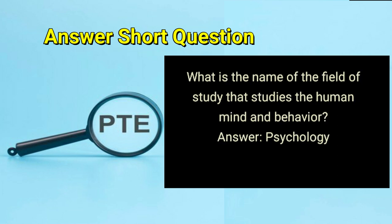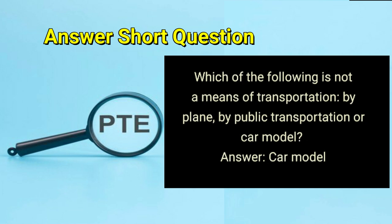What is the name of the field of study that studies the human mind and behavior? Answer: psychology. Which of the following is not a means of transportation — by plane, by public transportation or car model? Answer: car model.